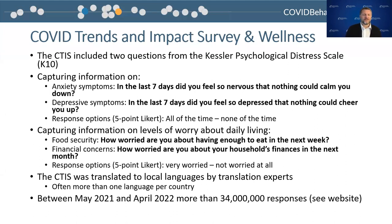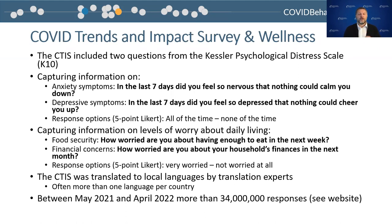The CTIS collects wellness data using a few different questions. The first two are pulled from the Kessler psychological distress scale, and these questions focus on depressive symptoms and anxiety in the last seven days. This Likert scale provided participants with five response options. There are also two additional questions that capture participants' reported worry about two everyday concerns: food and finances. For these questions, the participants chose from a different five-point Likert scale to assess their worry.